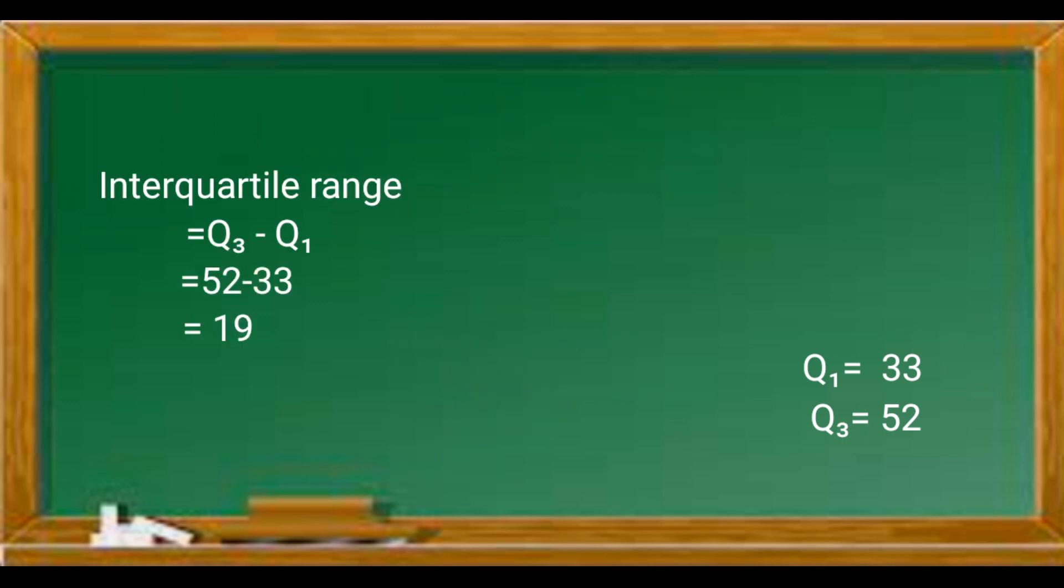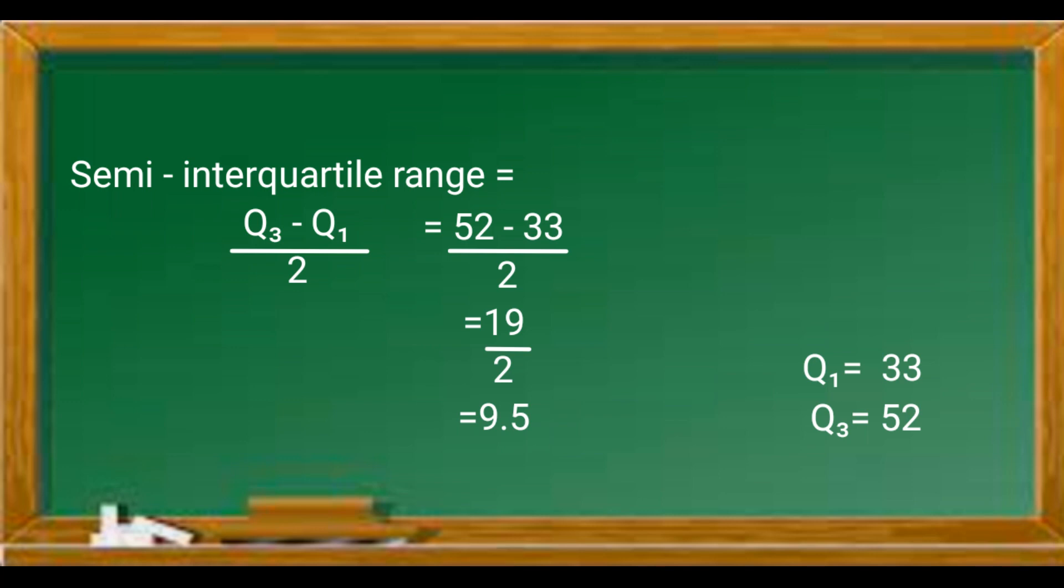The interquartile range, Q3 minus Q1, is 52 minus 33 and we will get 19. The semi-interquartile range is the interquartile range divided by 2. So it will be 19 divided by 2, which is equal to 9.5.